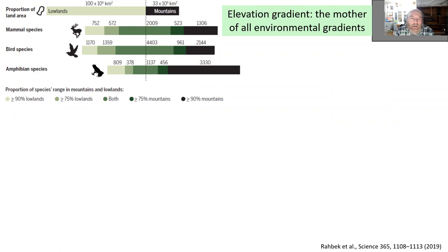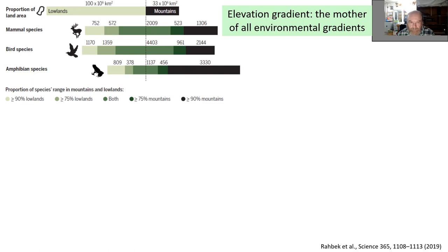When we look at the importance of mountain ranges, it's very clear when we compare species diversity living in the lowlands as opposed to mountains with the land area. The land area is three times larger for lowlands than for mountains, while for mammals, birds, and amphibian species, more of them actually live in the mountains. The dark color species, which are basically mountain endemics with more than 90% of their range in the mountains - in frogs, for instance, it's approximately half of all species.